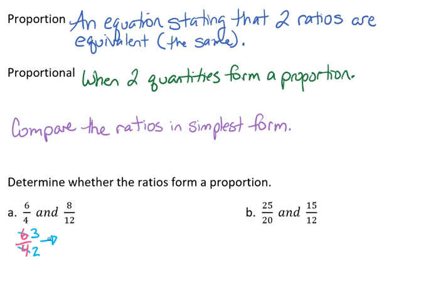Thus we see that our reduced ratio here would be 3 halves. And likewise, if we take 8 twelfths and we reduce that, here we can use 4. 4 goes into 8 two times, and 4 goes into 12 three times.